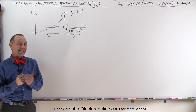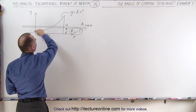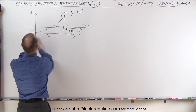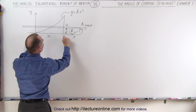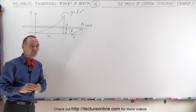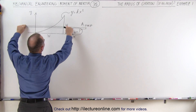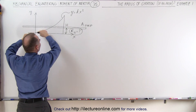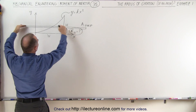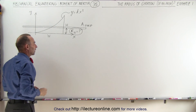Welcome to ElectronLine. Here we have an interesting area bounded by the curve y equals kx squared. The width from the y-axis to the edge is w, and the height is h. We're trying to find the radius of gyration, which is the distance to a strip that will represent the total area of this figure, placed at a distance so that the moment of inertia of the strip would be exactly the same as the moment of inertia of our figure.